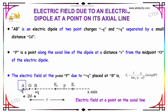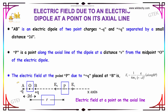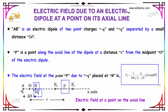Consider AB as an electric dipole of two point charges, minus Q and plus Q, separated by a small distance 2D. P is a point along the axial line of the dipole at a distance R from the midpoint O of the dipole. The electric field at point P due to plus Q placed at B is defined as E1 equal to 1 divided by 4 pi epsilon naught, into Q divided by R minus D, the whole square.